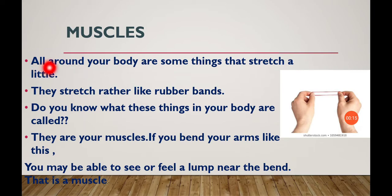Bones and muscles are interlinked. So all around your body, if something is straight a little, you have a little bit of a stretch. Stretch means it is a stretch. If you were bent, it was just because you had muscles. It's a stretching property. This is muscles.